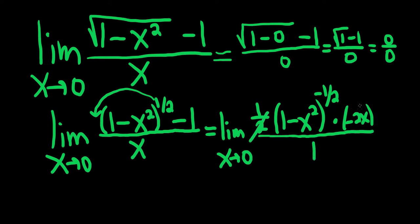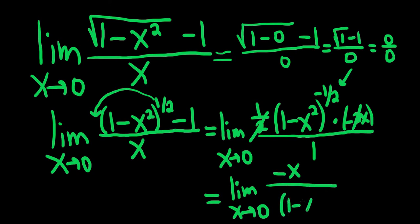The 2's cancel. This is equal to the limit as x approaches 0. We're left with a negative x upstairs. Then we can bring this piece downstairs, so it'll become (1 minus x squared) to the 1 half because the exponent becomes positive.